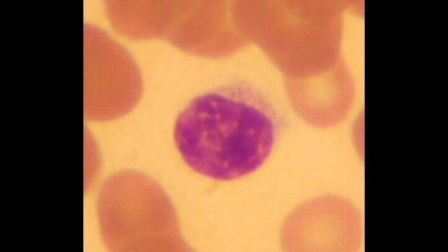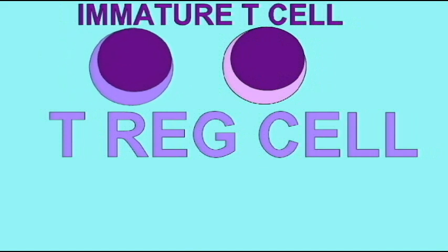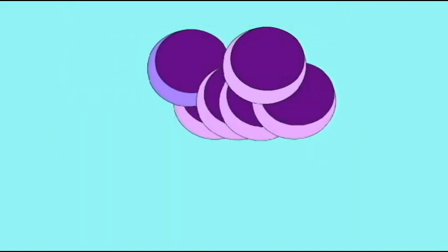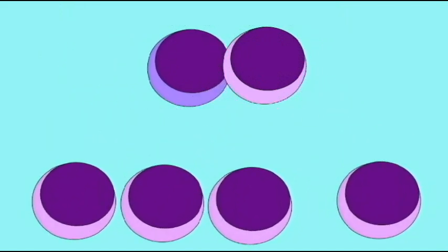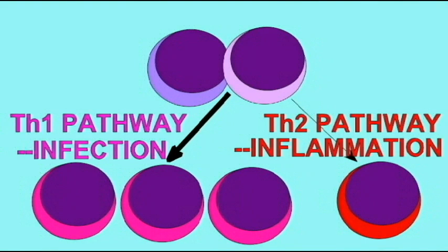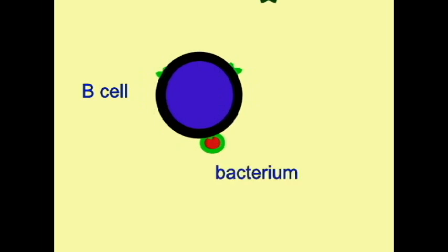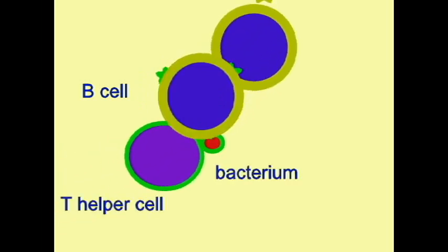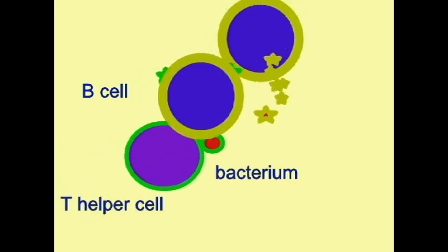There are different types of T lymphocyte which function in the cell-mediated aspect of adaptive immunity. There are a large number of classes, but the major ones are called the T helper cells — those cells which are needed to stimulate other immune cells into action.